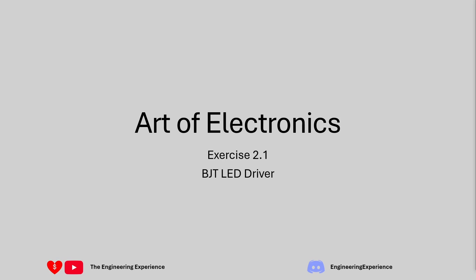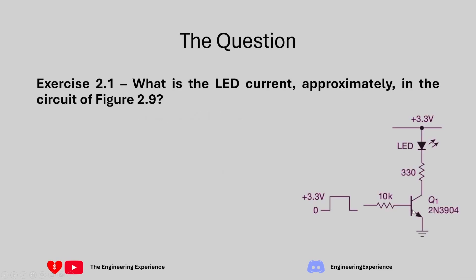What we will be doing in this exercise is using a BJT NPN transistor to drive an LED. We're going to assume we have some voltage coming in from a microcontroller. The circuit in figure 2.9 has an LED, a resistor, an NPN transistor - the 2N2904 - and then a resistor connected to the base.